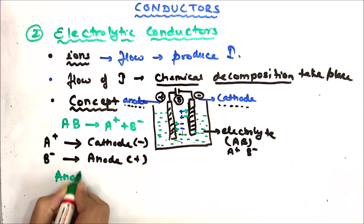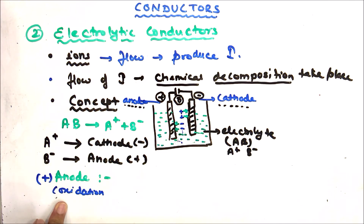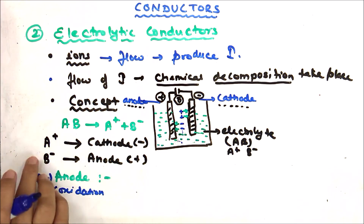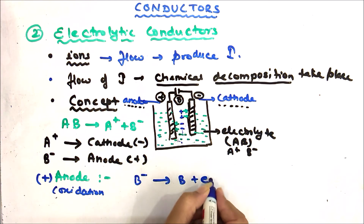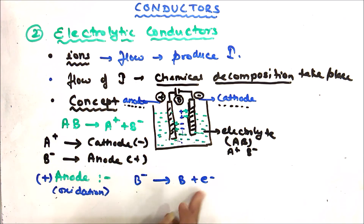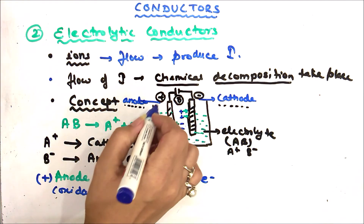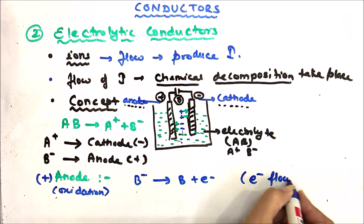At the anode, oxidation takes place. The B⁻ ion moves to the anode and releases an electron, forming neutral B. Electron is lost — this is oxidation. These electrons then flow from the anode through the external circuit to the cathode.